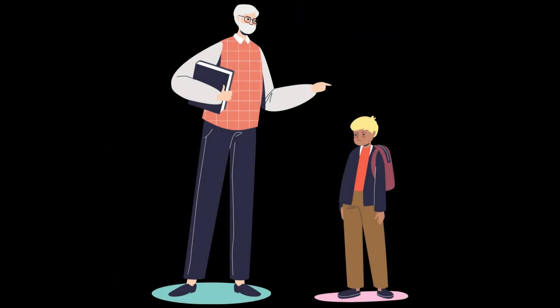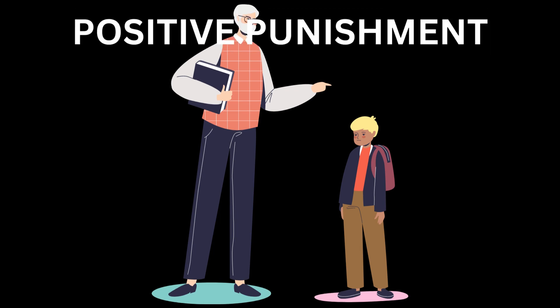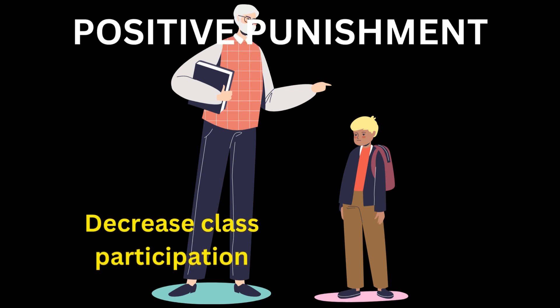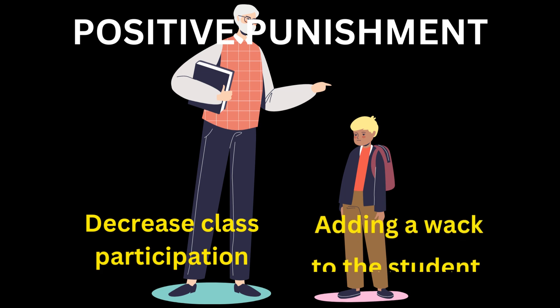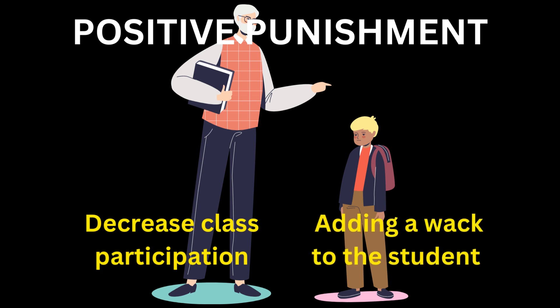On the other hand, if the teacher hits a student for participating in class, it is positive punishment, as the teacher is trying to decrease the class participation behavior by adding a hit or a whack to the student.